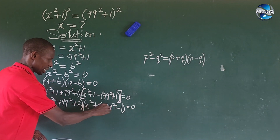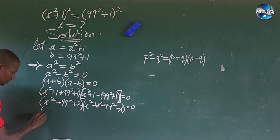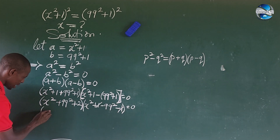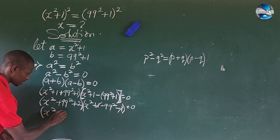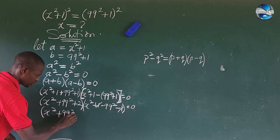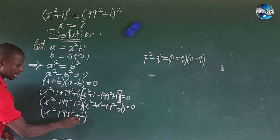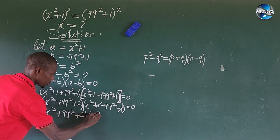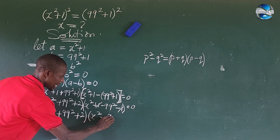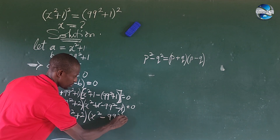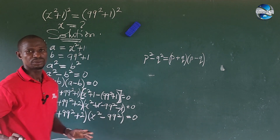The plus 1 and minus 1 in the second bracket cancel. So we are now left with: (x squared plus 99 squared plus 2) times (x squared minus 99 squared) equal to 0.